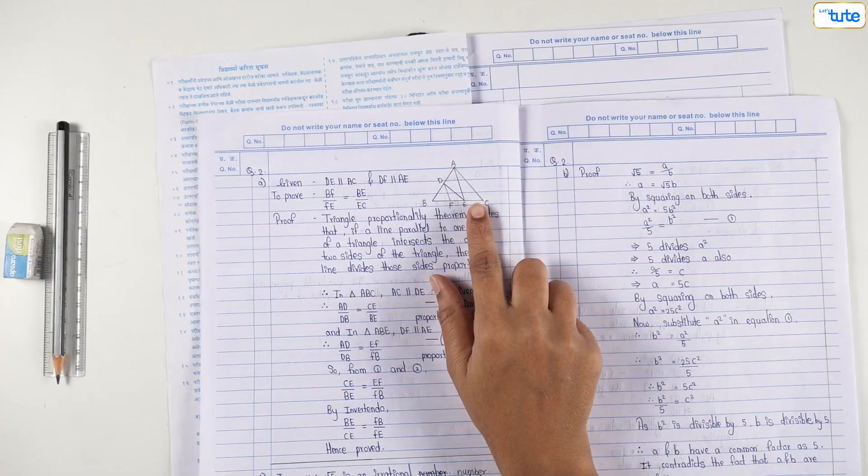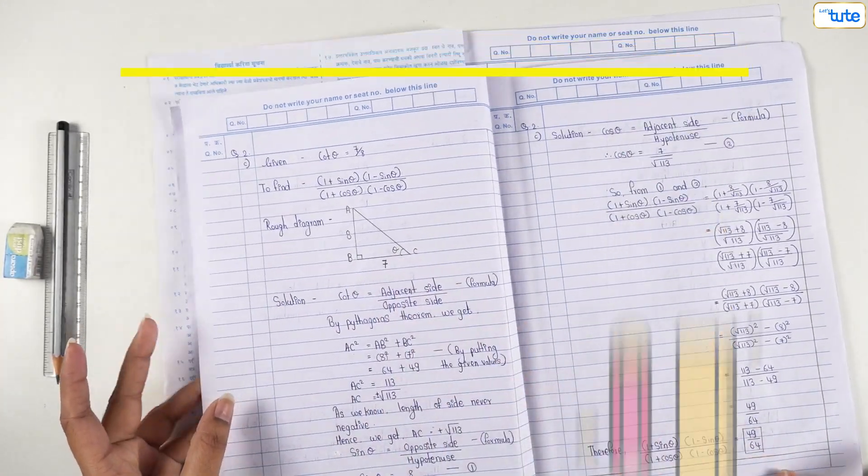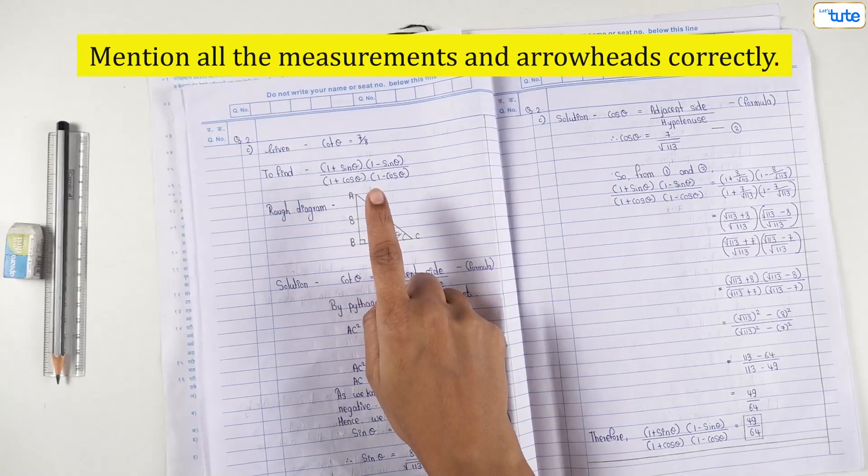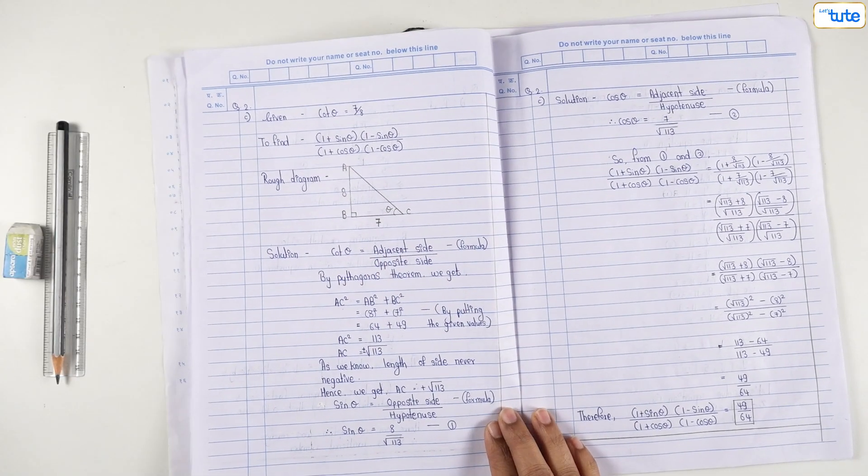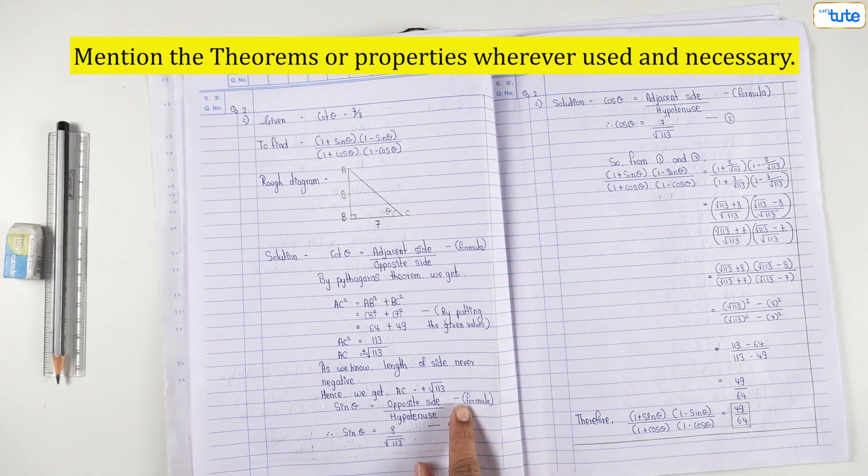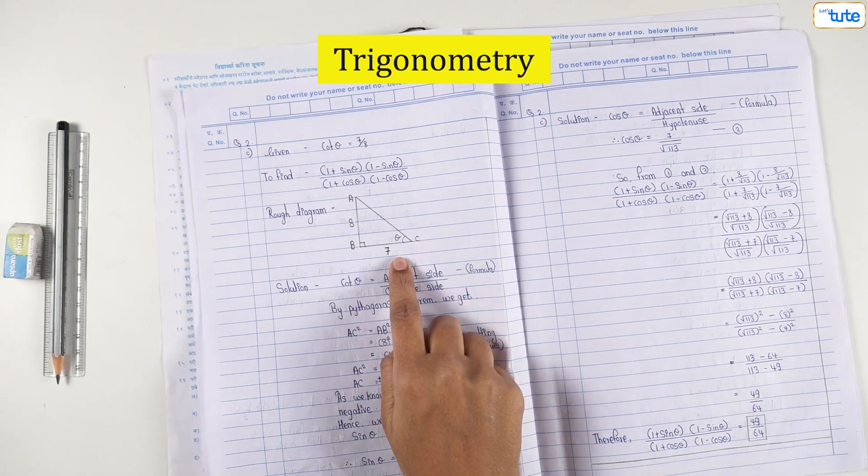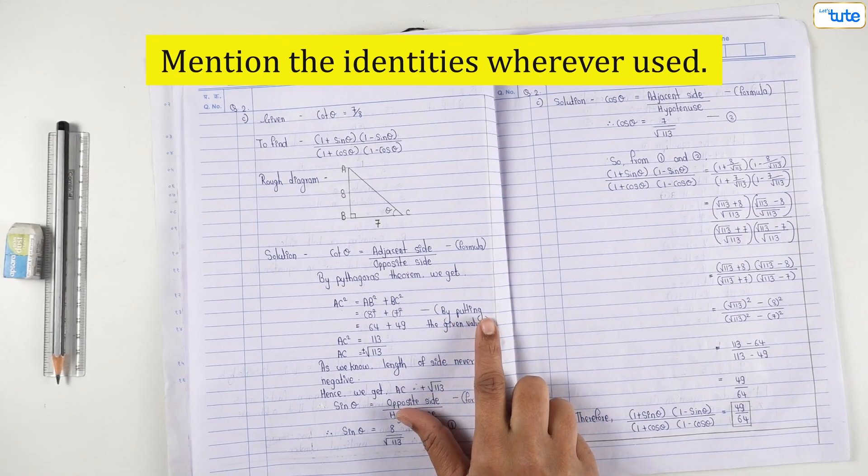In the case of geometric questions, always draw the diagram using a scale and a pencil. Make sure you mention all the measurements and arrowheads correctly. In the case of proofs, mention the theorems or properties wherever used. In the case of trigonometric questions, mention the identities wherever used.